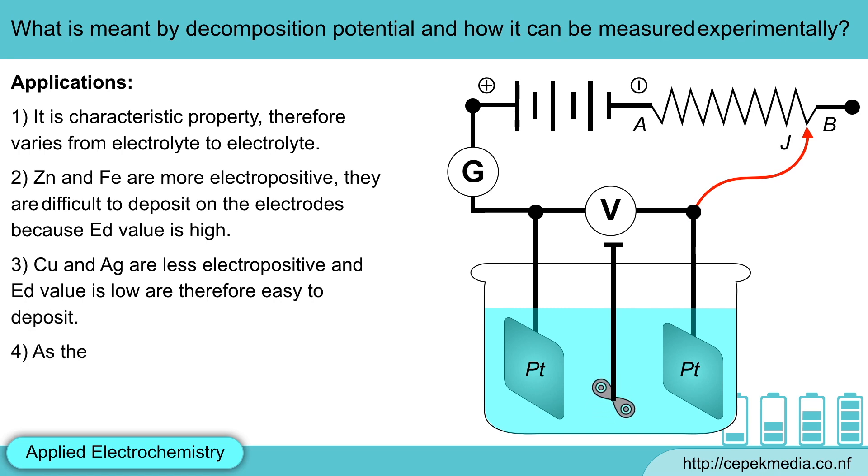As the decomposition potential for iron is more and for copper it is less, therefore, they can be separated from the mixture.